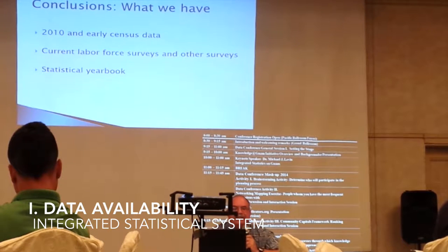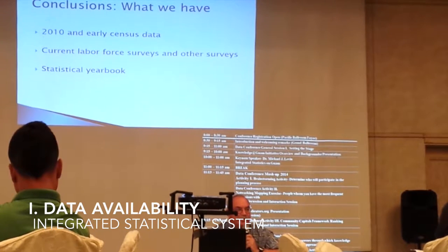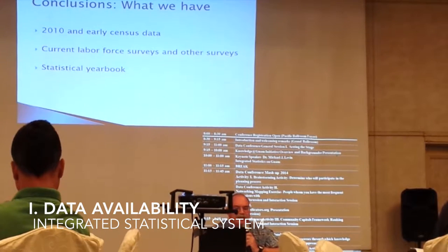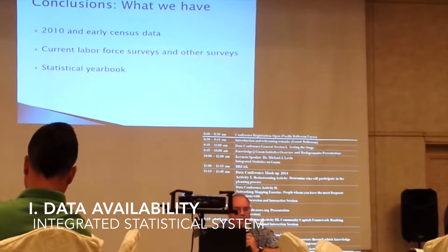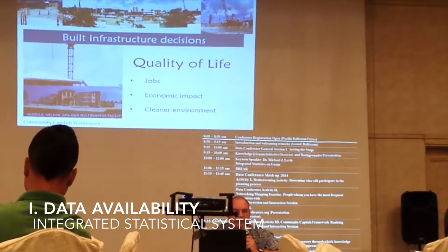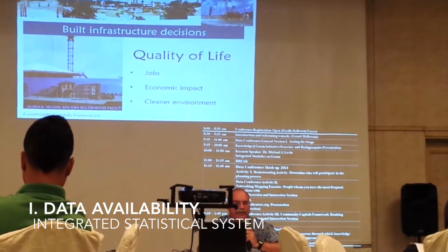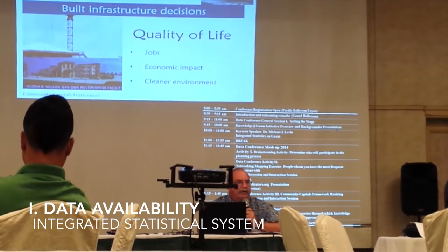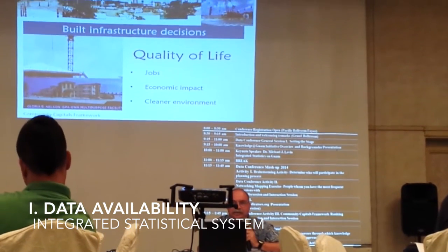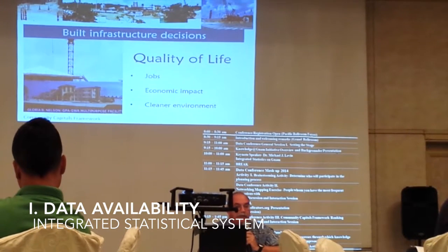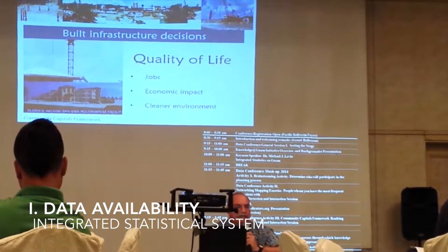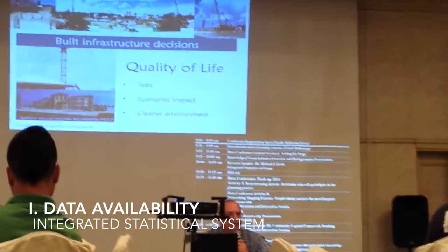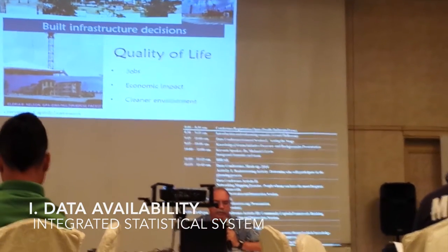In conclusion on the data: we have the 2010 and earlier census data so we can do trends. We have the current labor force surveys and other surveys. And we have this really excellent statistical yearbook. Besides the numbers, there's the whole issue of quality of life. The statistics tell you how things are changing — how many people are in poverty, how many are using food stamps — but you have to take into account other characteristics of the population as well.